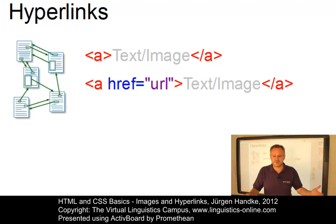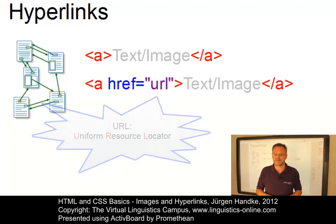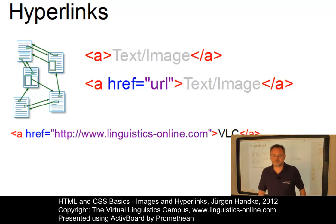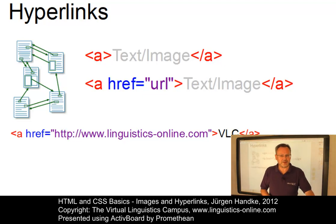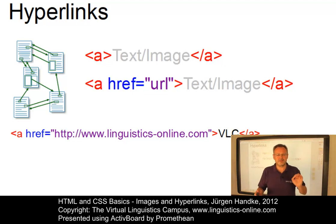The target document has a unique address — the so-called Uniform Resource Locator, or URL. In our example, the URL, that is the value of the attribute href, is the address of the homepage of the Virtual Linguistics Campus. Do you really understand the concept behind the URL? If not, here is a short excourse.